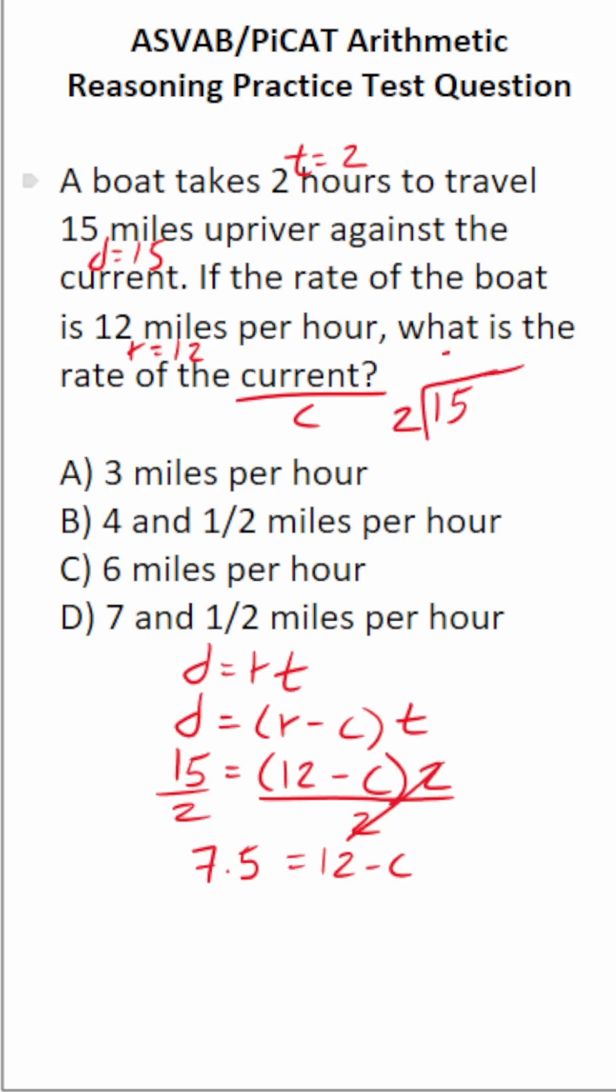2 goes into 15 seven times without going over. 2 times 7 is 14. 15 minus 14 is 1. We have to add a decimal now and a zero placeholder. Drop that zero down. 2 times 5 is 10. And we've got to bring that decimal up into our answer. 2 times 5 is 10 with no remainder. So that's how we got 7.5.